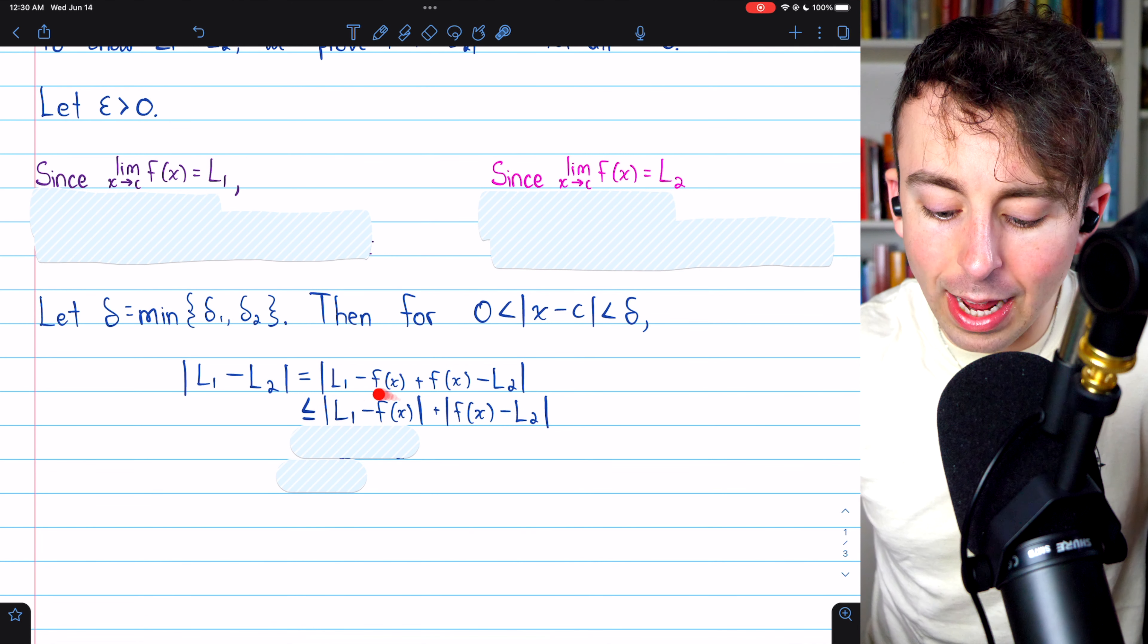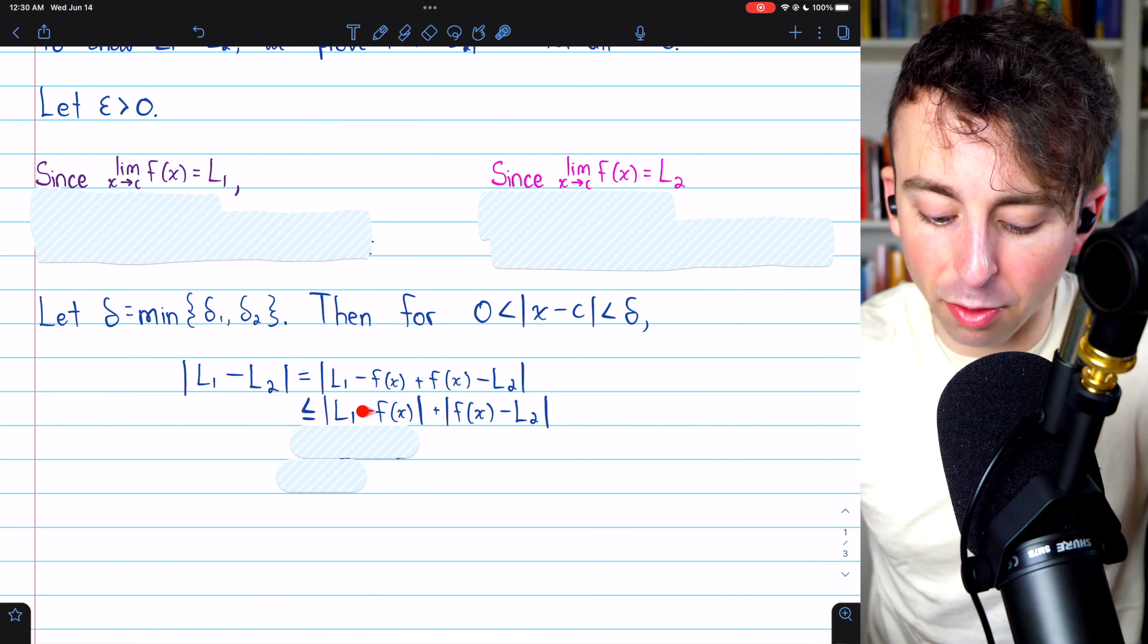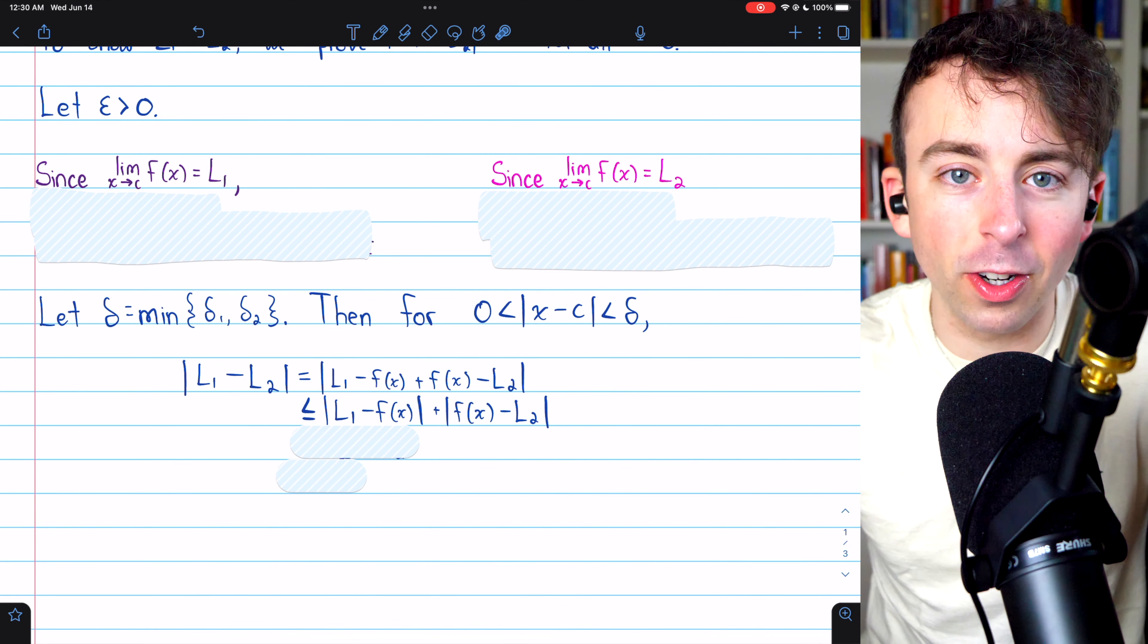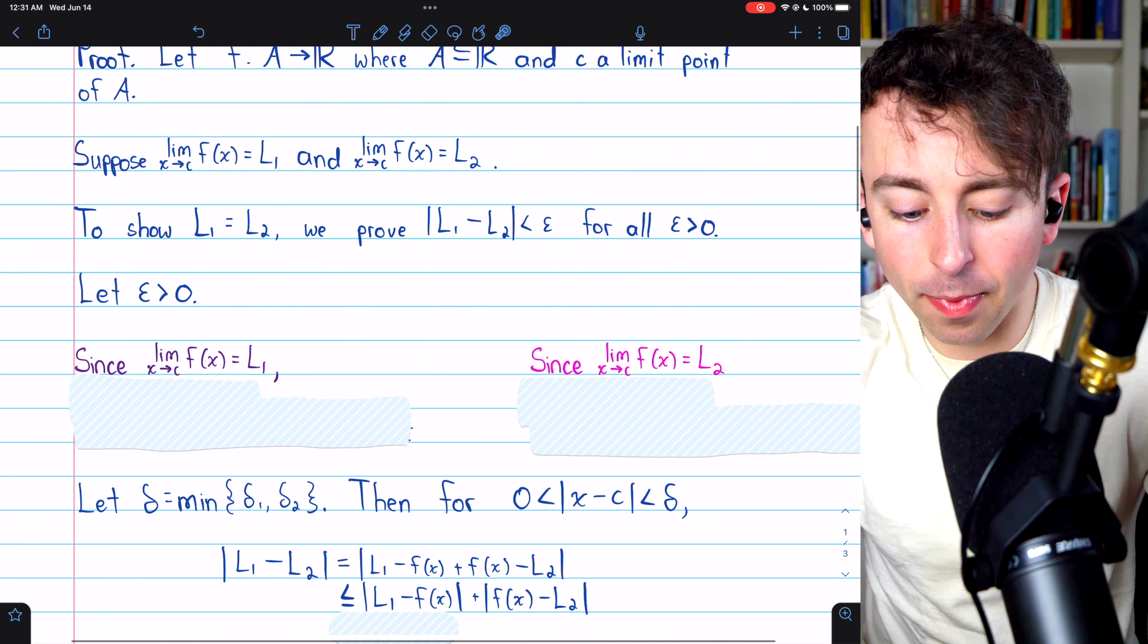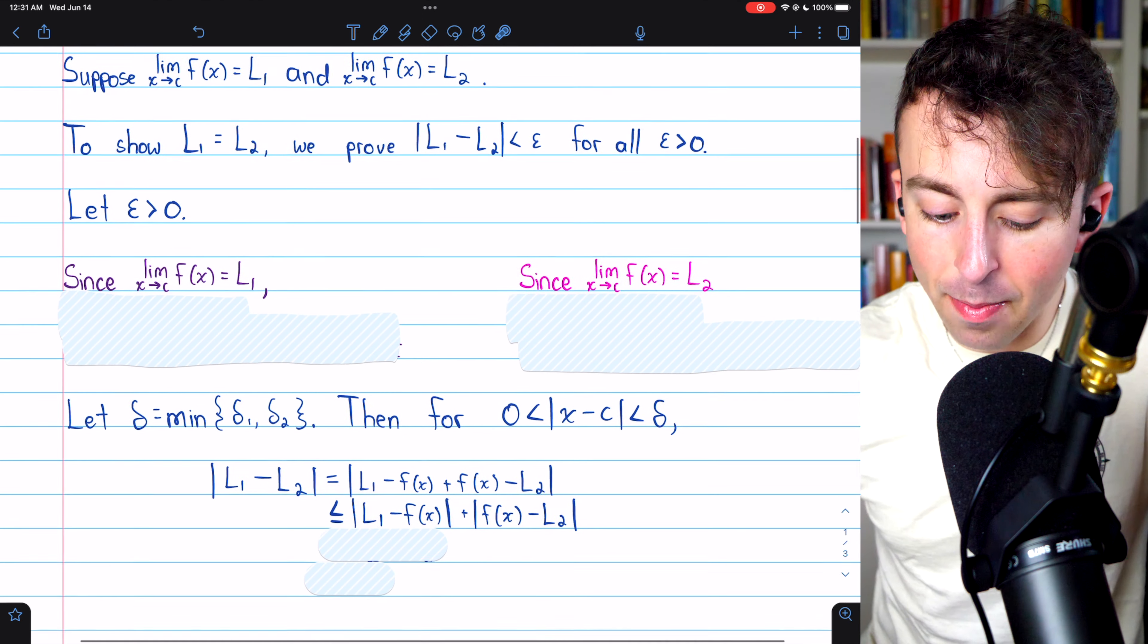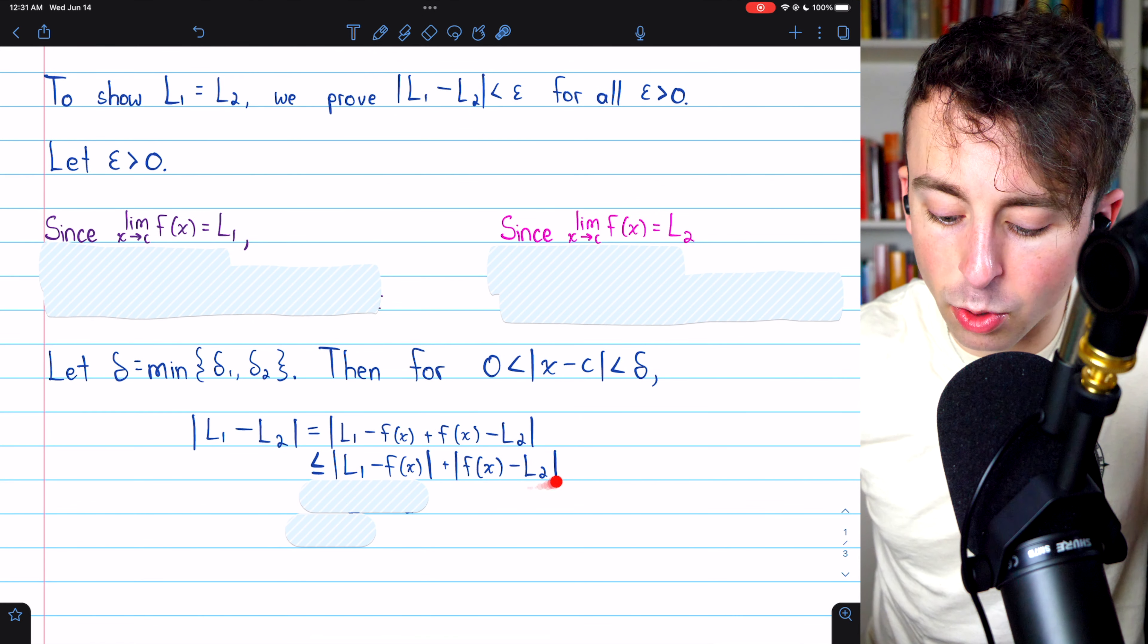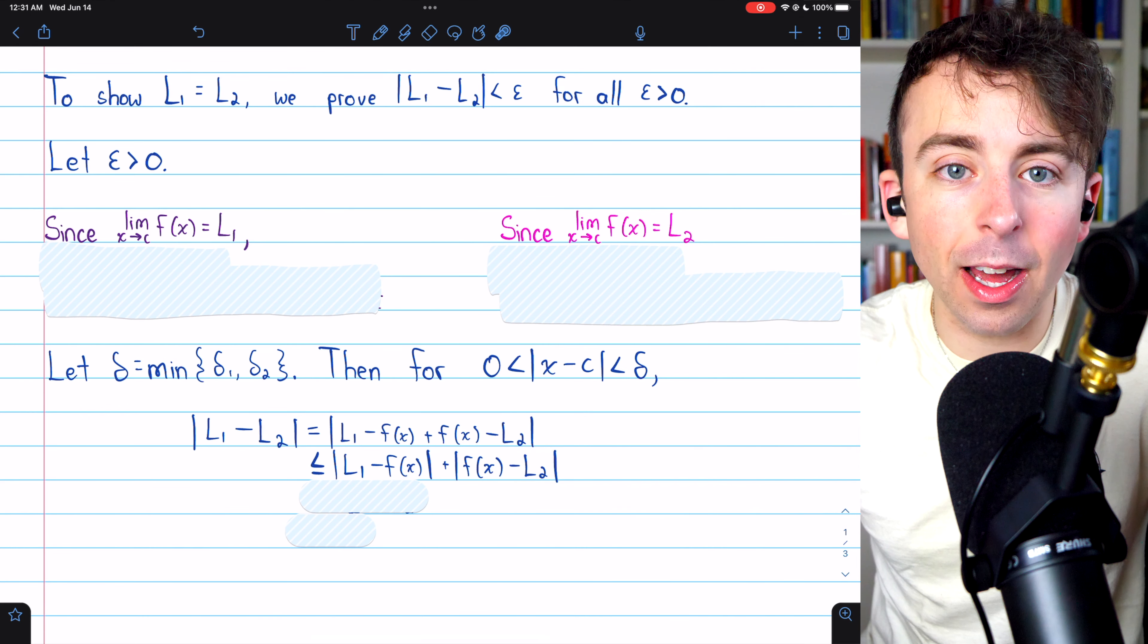because we can control both of these expressions. This is the distance between f of X and L1. It's in an absolute value bar, so it doesn't matter what order we do the subtraction. We can make that as small as we want. L1 is the limit of f of X. So, we can make that arbitrarily small. Same thing goes for this distance between f of X and L2. So, how small should we make them?